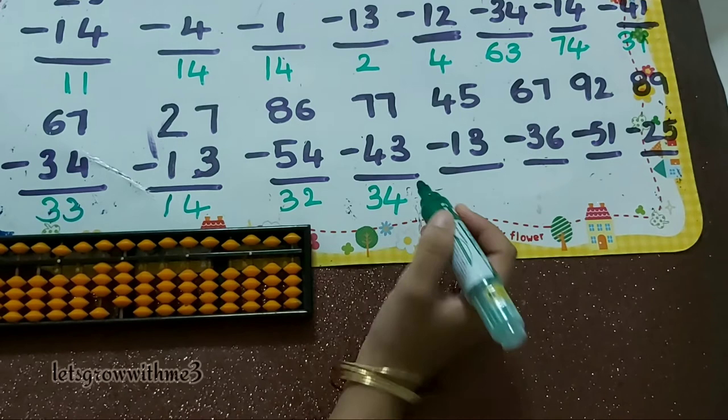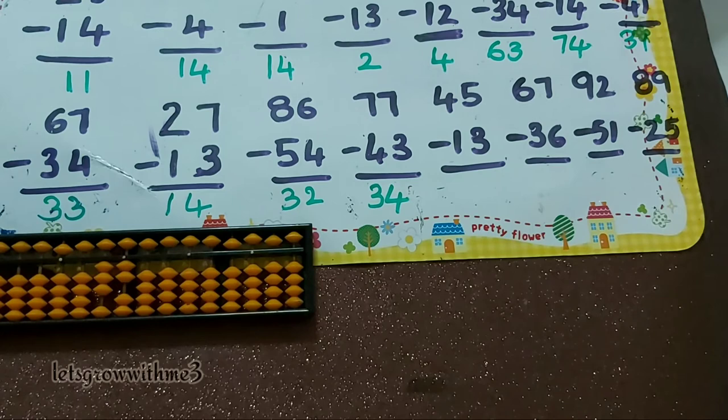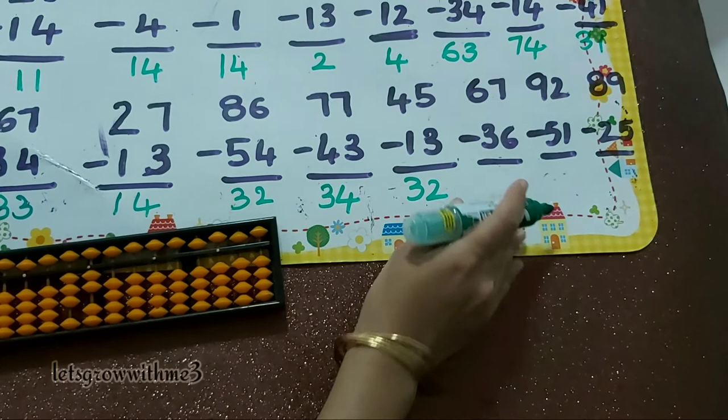Next one, 45 minus 13: minus 1, minus 3, minus 5 plus 2. So the answer is 32.